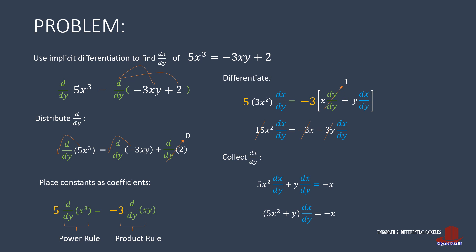Factor out the derivative and have the quantity of 5x squared plus y with the derivative, as equal to negative x. Take the derivative by dividing both terms by 5x squared plus y, thus having the final derivative as negative x over 5x squared plus y.